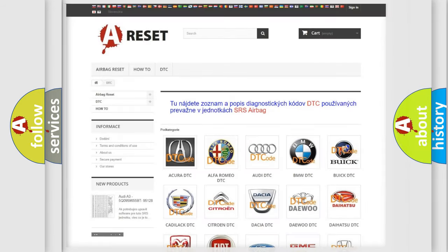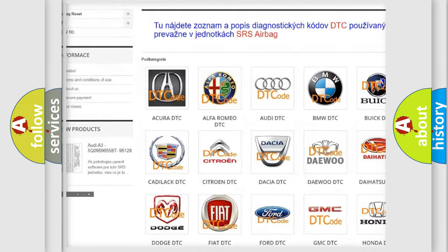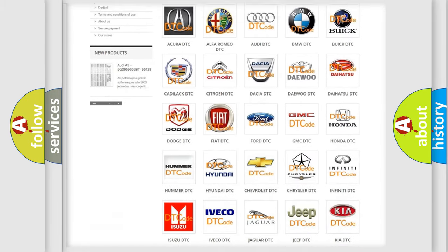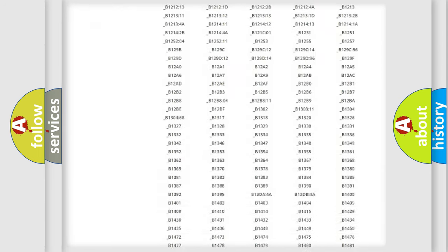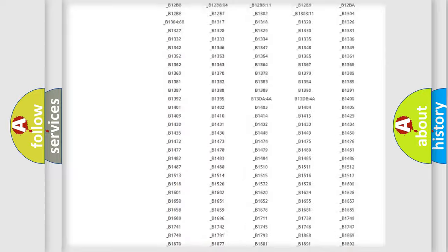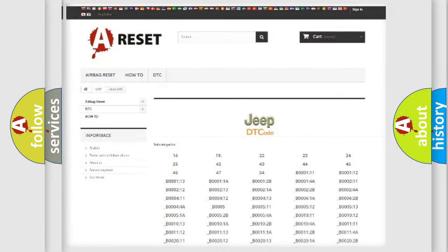Our website airbagreset.sk produces useful videos for you. You do not have to go through the OBD2 protocol anymore to know how to troubleshoot any car breakdown. You will find all the diagnostic codes that can be diagnosed in a car, Jeep vehicles, and also many other useful things.